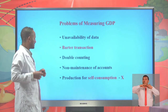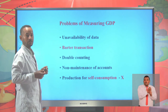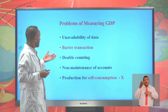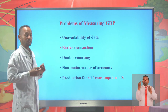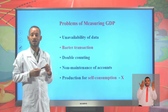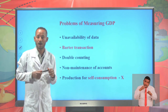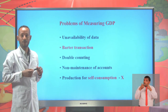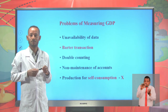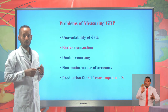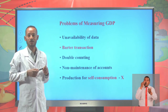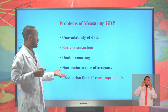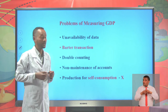The other problem is the maintenance of accounts — it is difficult to maintain different accounts. Another problem is production for self-consumption: products which are produced at home and consumed at home are not included in measuring GDP, but they are economic activity. For example, baking bread, injera, and firewood — all these are products produced and consumed in a house, so they are not included in measuring GDP.